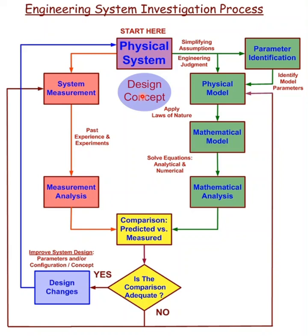The first step in the process is to create a physical model of the physical system or the design concept. This is done by using engineering judgment and making simplifying assumptions. There is a hierarchy of physical models possible, from the less real and less complex to the more real and more complex. The key is to create a physical model that captures the essential attributes of the system or design concept and gives the greatest insight. Modeling is all about insight.